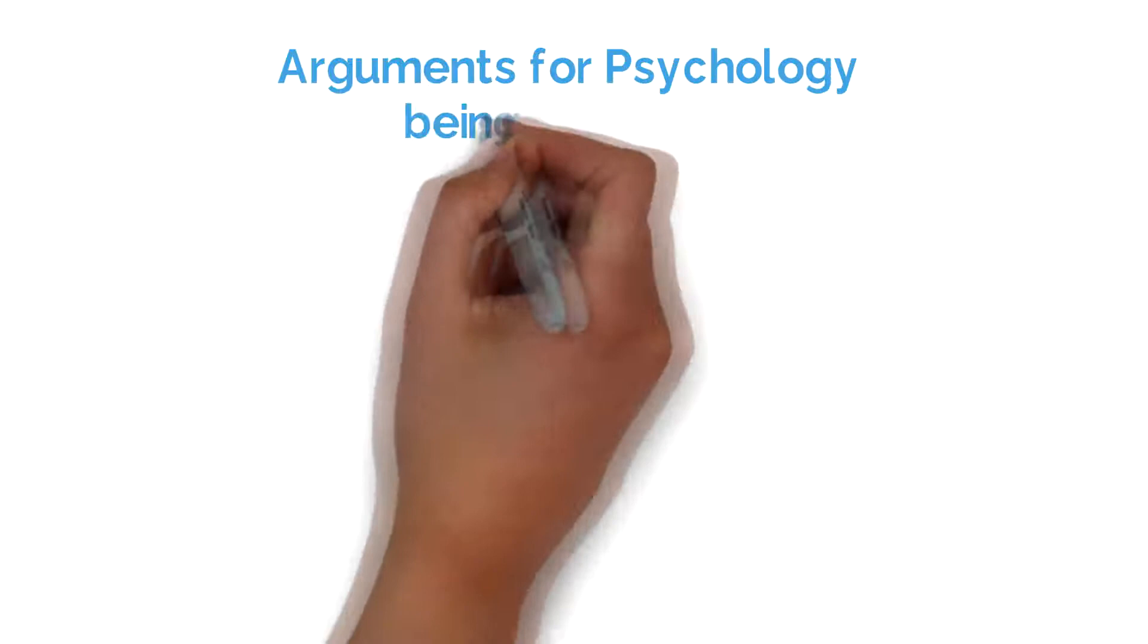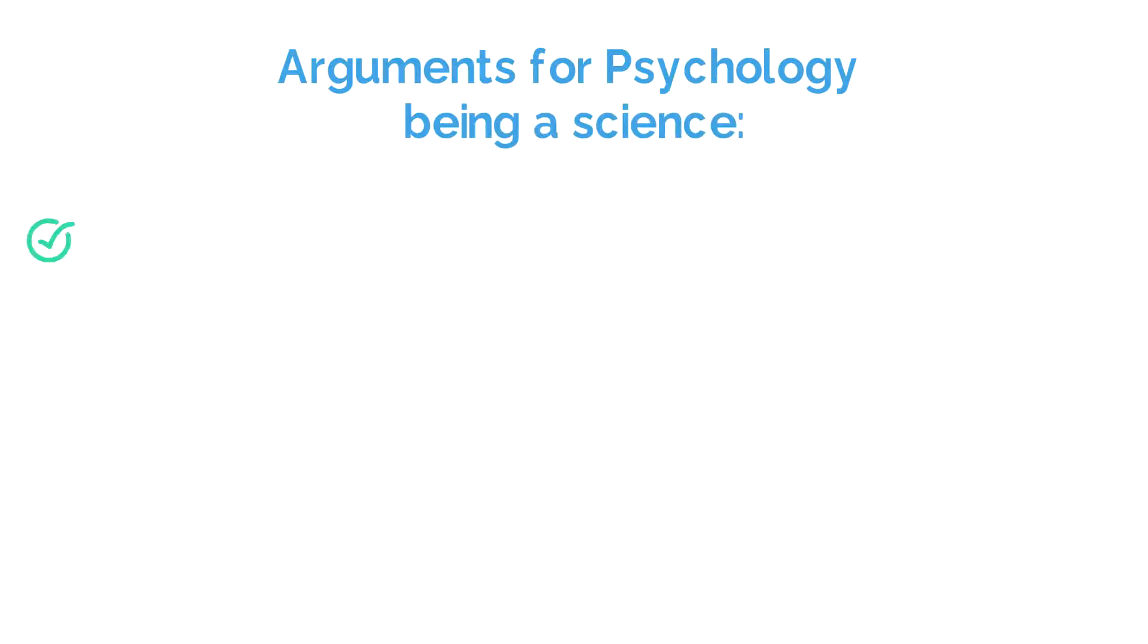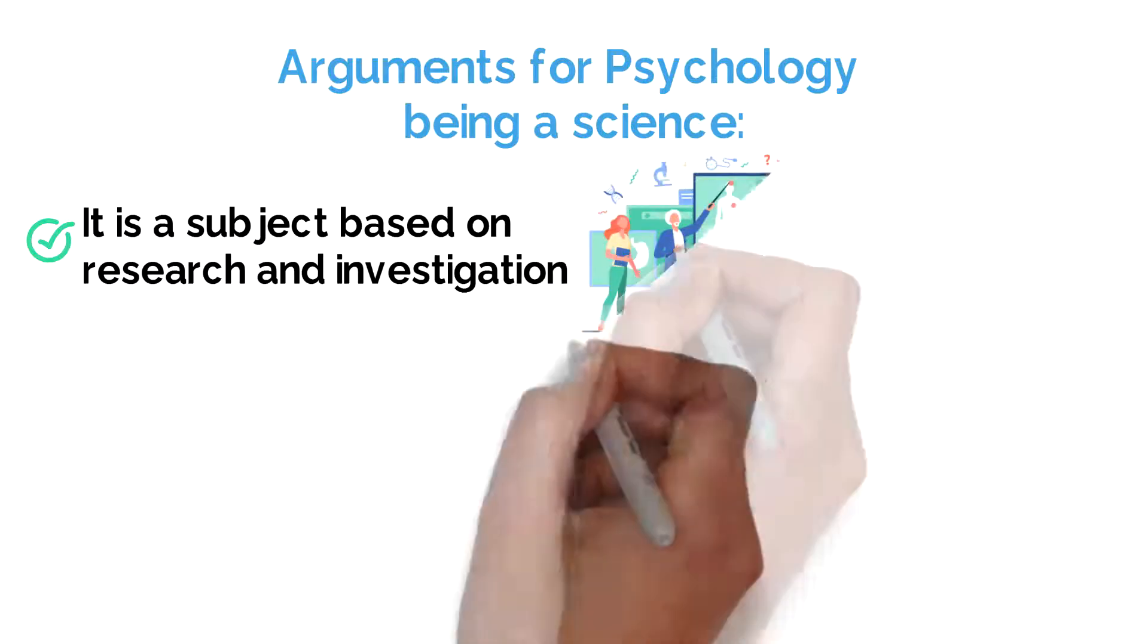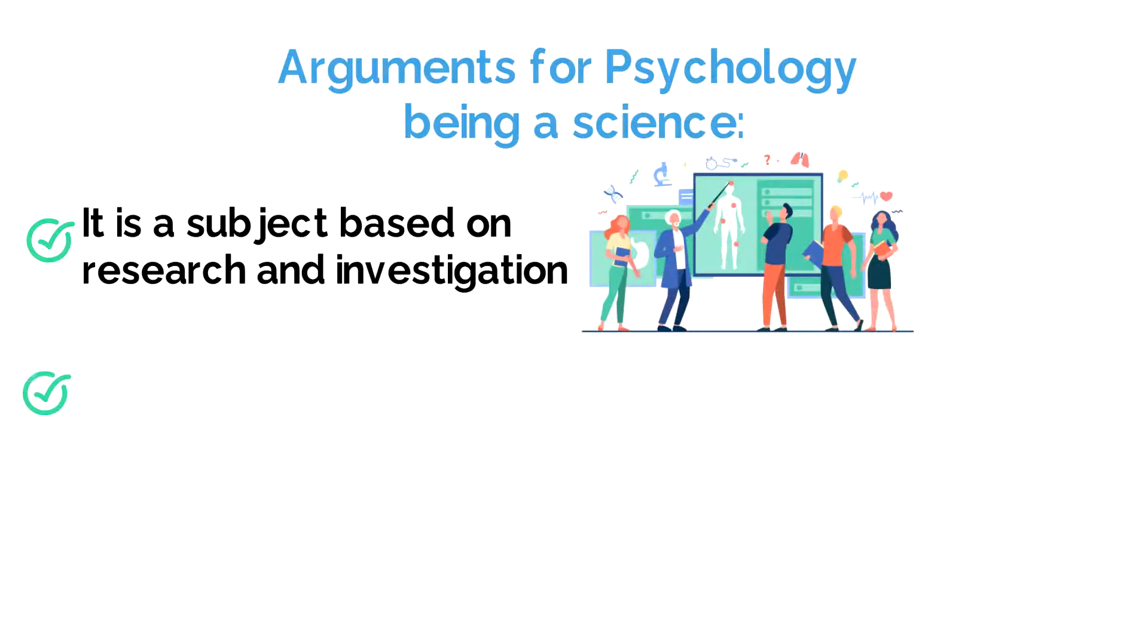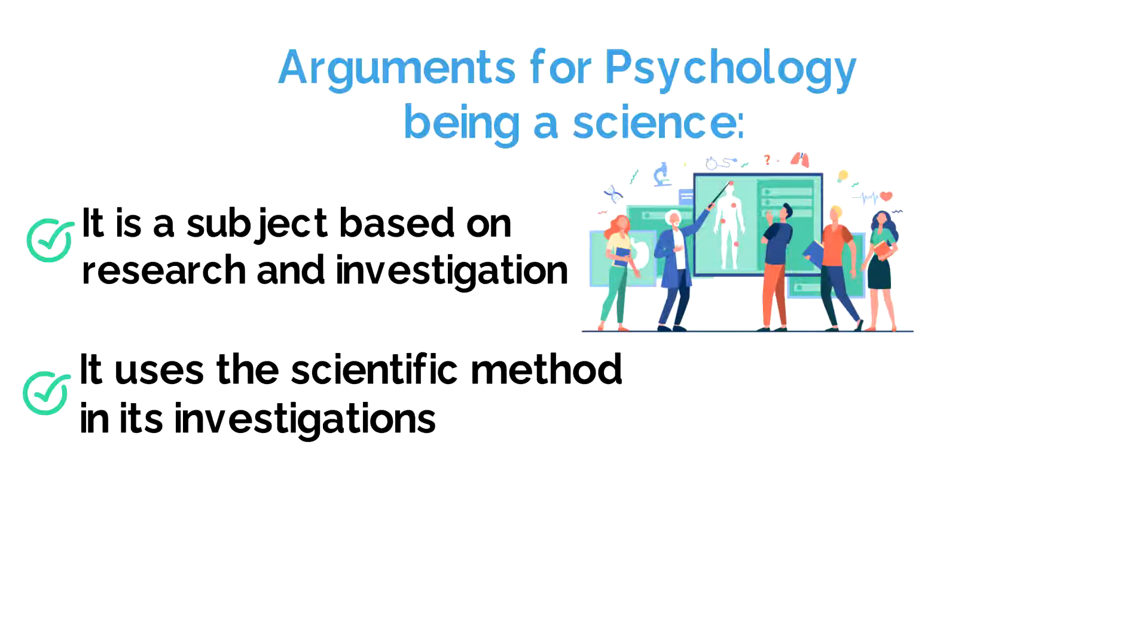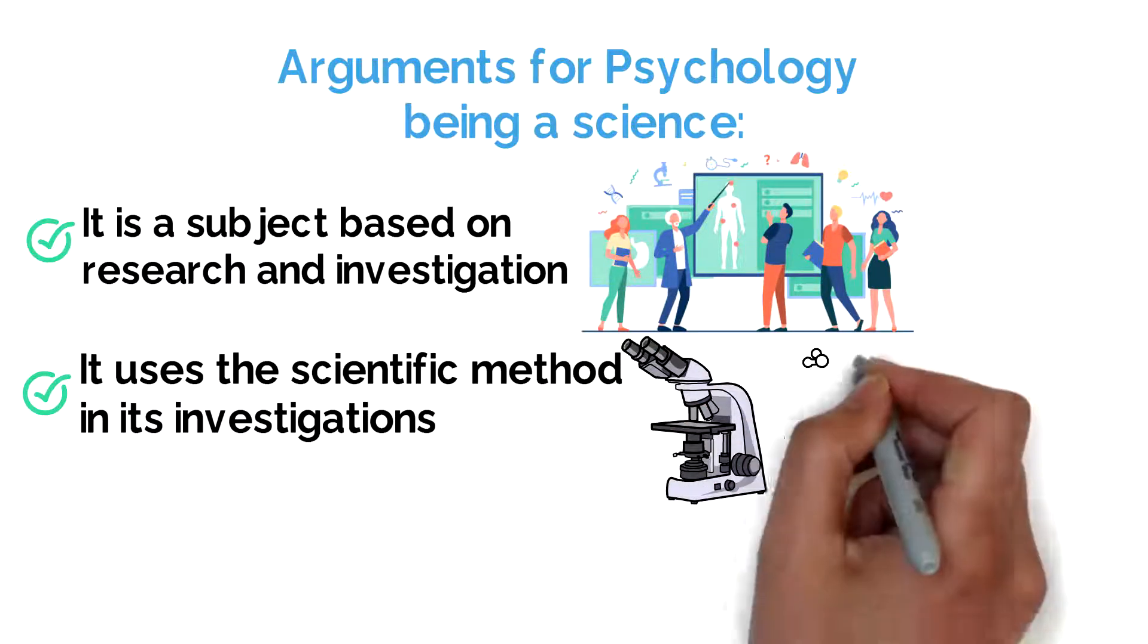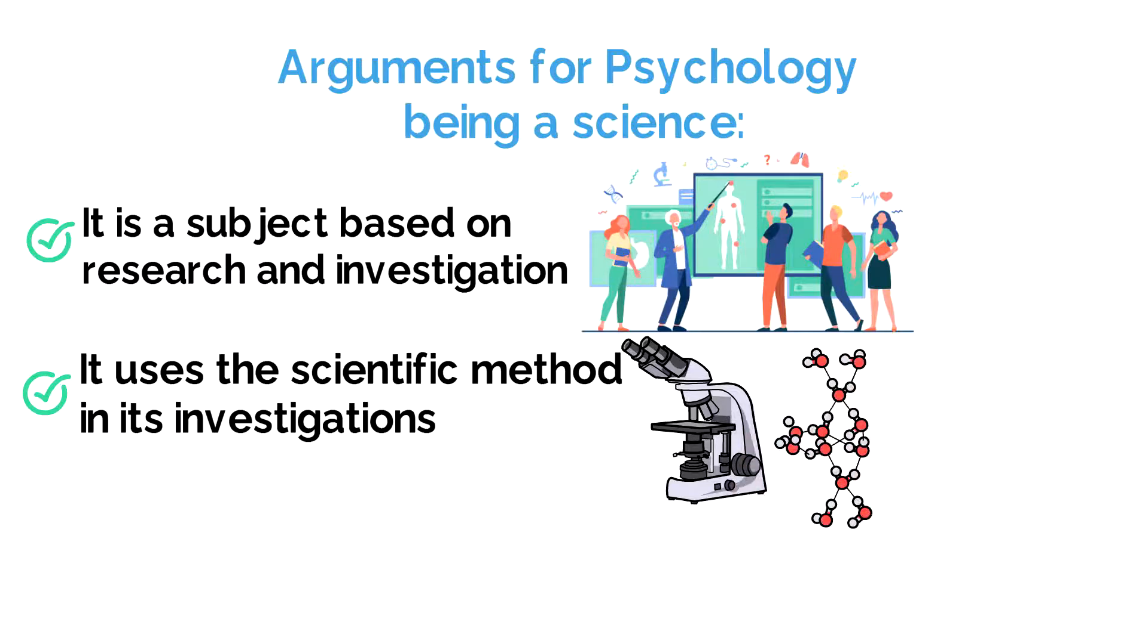Some of the arguments for psychology being a science include the following. It is a research-based subject with a science-based investigation approach at its core. Psychology uses the scientific method in its investigations. It is carried out through genuine experimentation, which includes the manipulation of the independent variables.